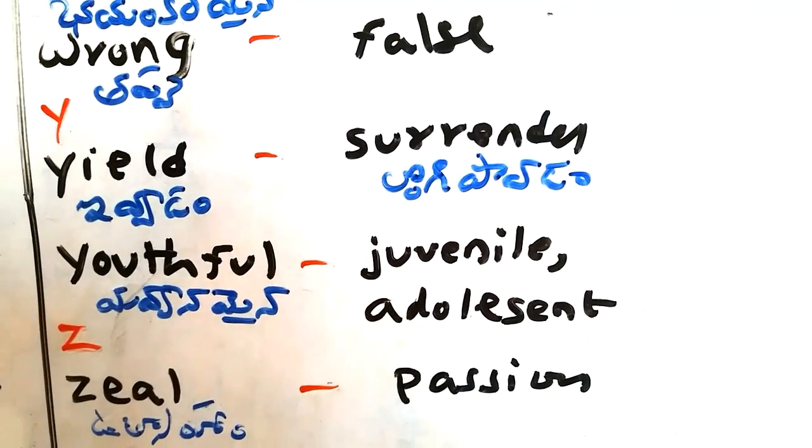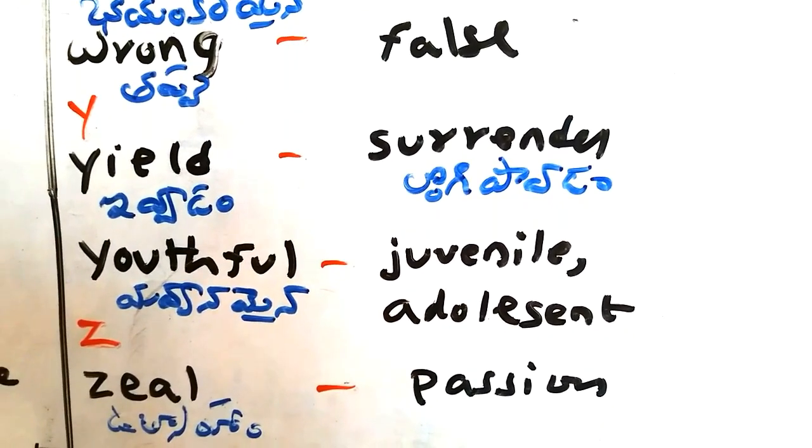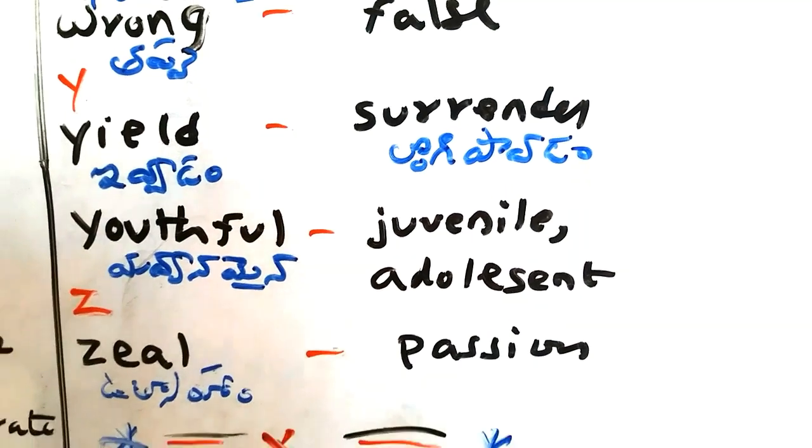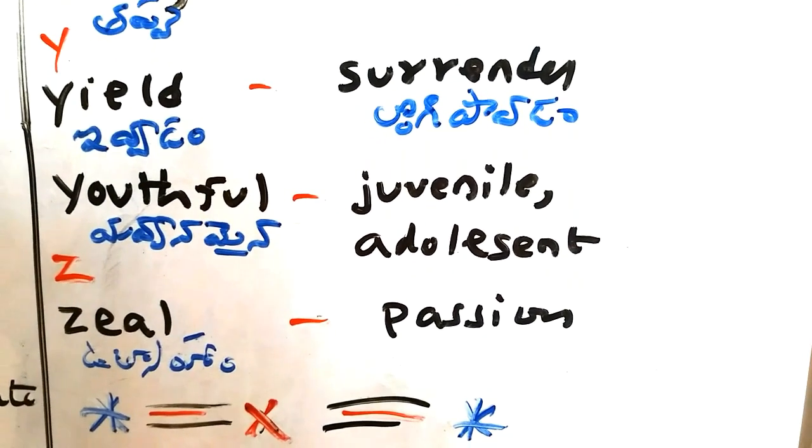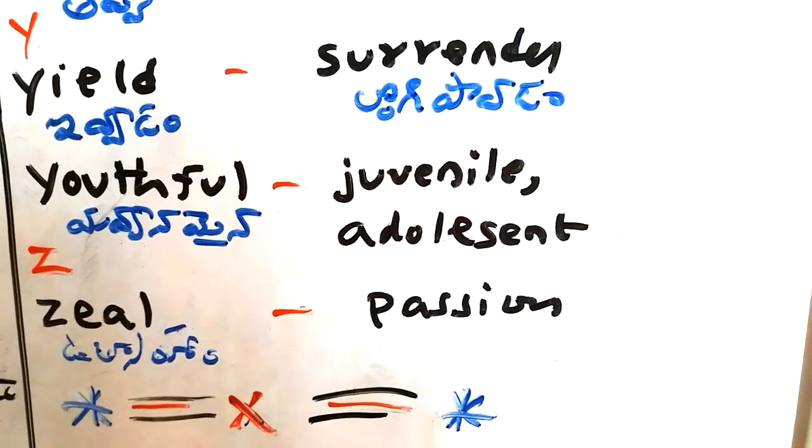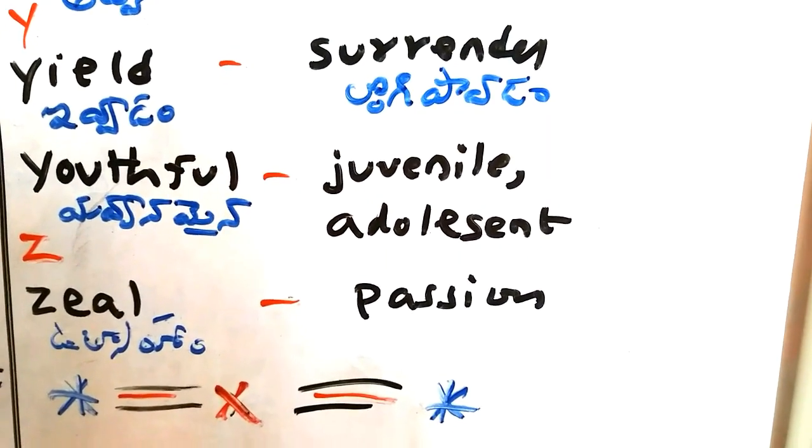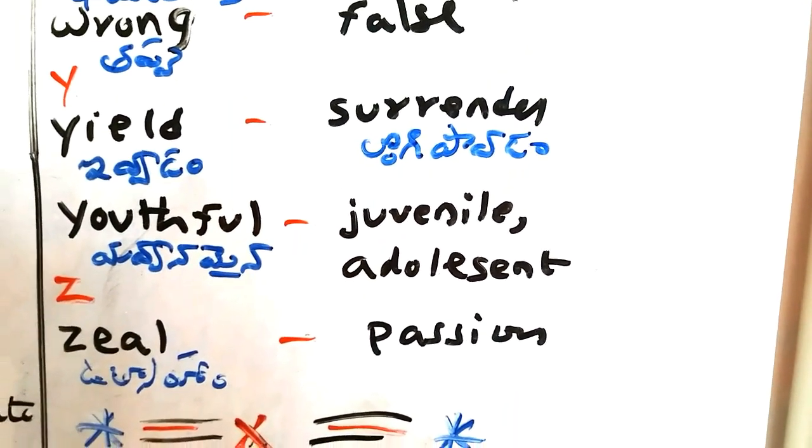Yield - evadam, surrender. Youthful - yieldamayana, juvenile, adolescent. Zeal - ucchaahum, passion. Thank you for watching.